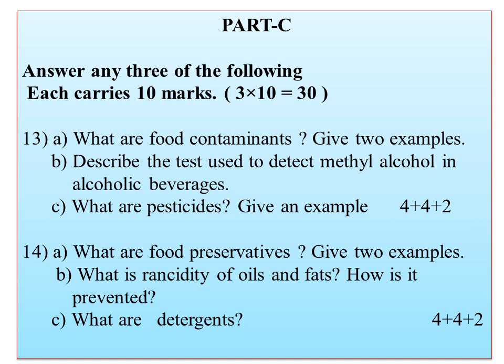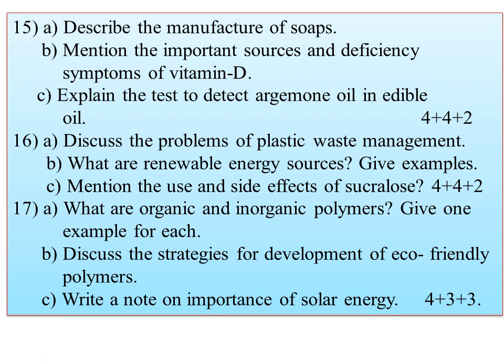Sample Part C questions (4+4+2): What are food contaminants? Give 2 examples. Describe the test used to detect methyl alcohol in alcoholic beverages. What are pesticides? Give an example. What are food preservatives? Give 2 examples. What is rancidity of oils and fats? How is it prevented? What are detergents? Questions 15, 16, 17: Describe the manufacture of soap. Mention the important sources and deficiency symptoms of vitamin D. Explain the test to detect arjun oil in edible oil. Discuss the problem of plastic waste management. What are mineral sources of energy? Mention the uses and side effects of sacralose. What are organic and inorganic polymers? Give an example for each. Discuss strategies for the development of eco-friendly polymers. Write a note on the importance of solar energy.